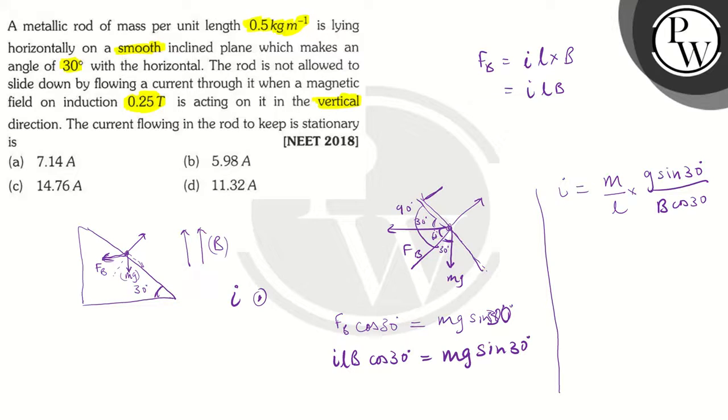Let's substitute this value. M by L is the mass per unit length, so we can write this as 0.5. The value of G is 9.8. Sin 30 is 1 by 2. We know the value of B is given as 0.25. And cos 30 is root 3 by 2 which simplifies to 0.866. On cancelling 0.25 and 0.5 we get a value of 2. And this 2 can get cancelled. So, finally we have 9.8 divided by 0.866, which on solving gives the value around 11.32 Amperes.